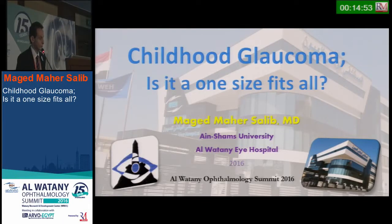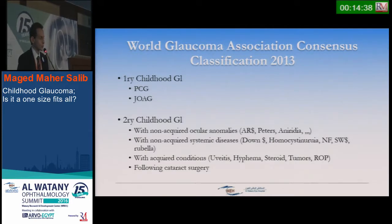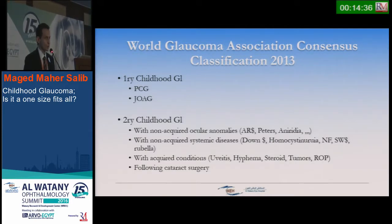Good everybody. We will talk about childhood glaucoma — is it a one-size-fits-all or not? The World Glaucoma Association Consensus Committee reinvented a name for congenital glaucoma and juvenile onset glaucoma and called it childhood glaucoma. So we'll adopt this name and the new classification.